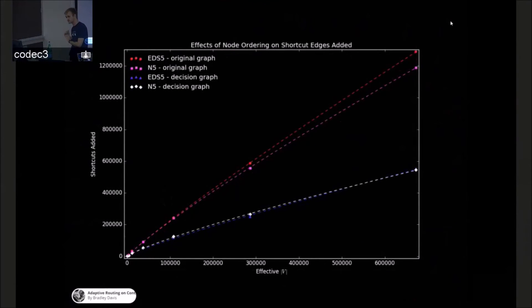There's not a lot I can say about this graph. This is just the number of shortcut edges that were added during the process. And really all this shows is that N5 as a heuristic produces almost as many shortcut edges as EDS-5, which means it's not wasteful.